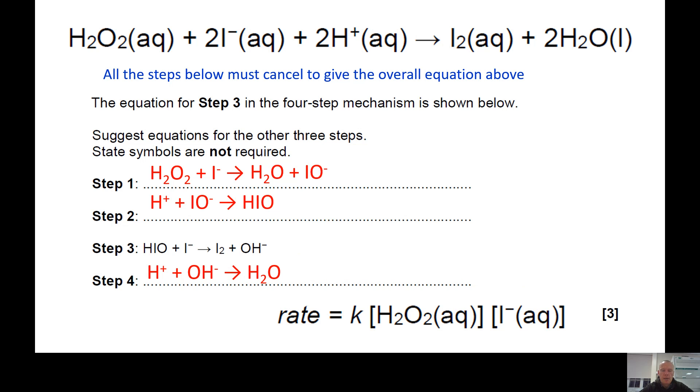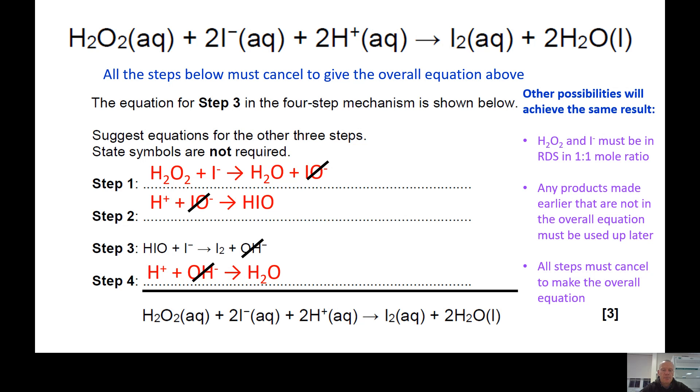Now what I think about is how do I cancel everything out? Looking at all four steps, not just the ones I've written in, I can get rid of IO-, I can get rid of OH-, and that leaves me with the overall equation underneath.